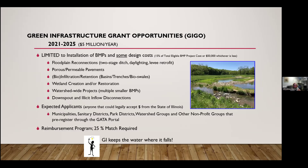The GEIGO program has $25 million total — $5 million per year for five years. The current NOFO is the fourth year of funding, and there will also be a notice of funding opportunity in the spring of 2025. Because we only have $5 million for the entire state, funding is limited to installation of best management practices and some design costs — specifically 15% of total eligible BMP costs, not to exceed $50,000, whichever is less.